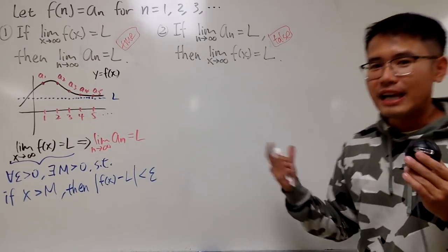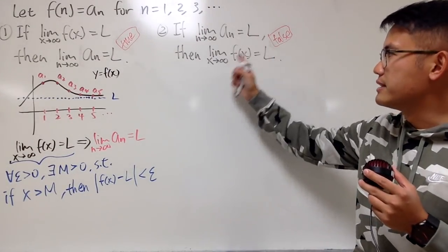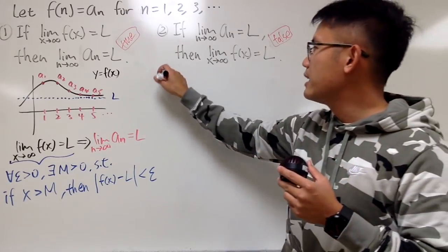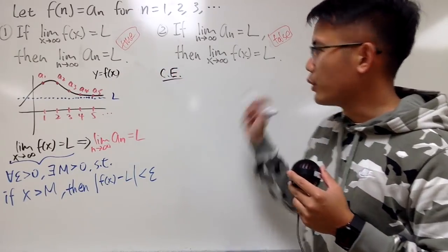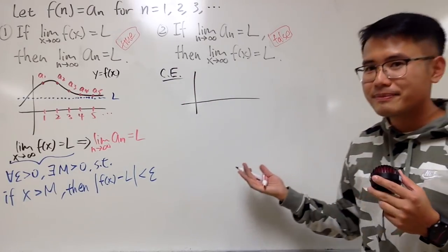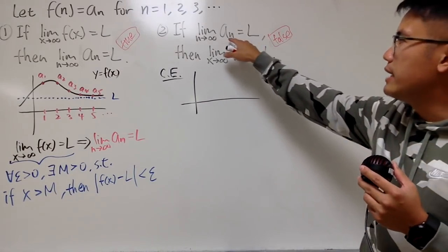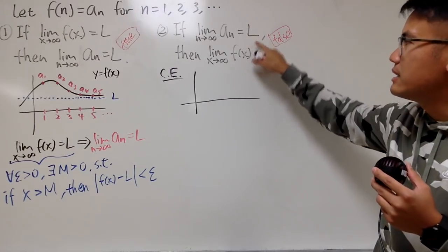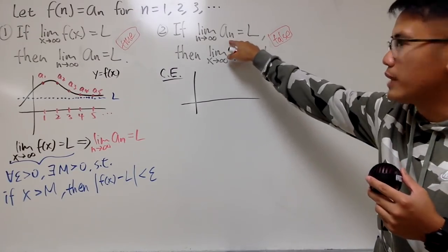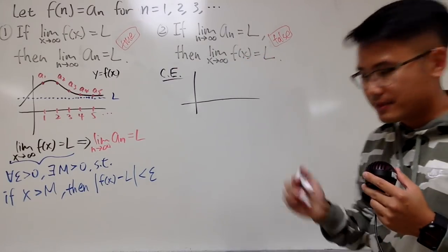Now let's talk about the second statement — that's actually the main purpose of this video. I will show you why this statement does not imply the other one. To do so, I just need to provide a counter-example, and I'll use a graph to help with my thought process. I need to find a sequence aₙ that converges to L, but where the function f — satisfying f(n) = aₙ — does not go to L.